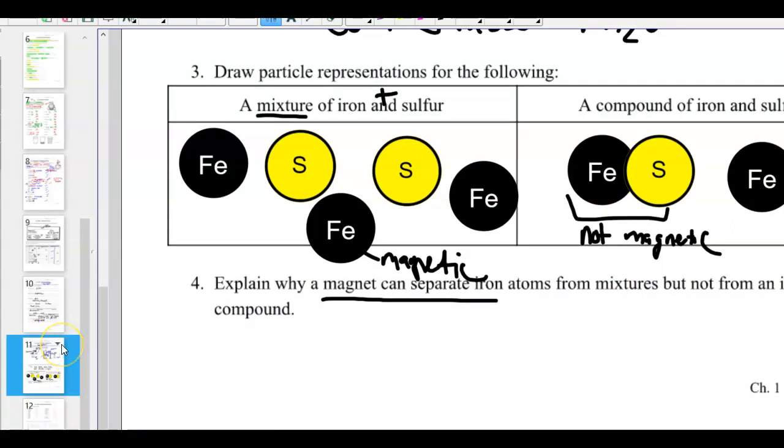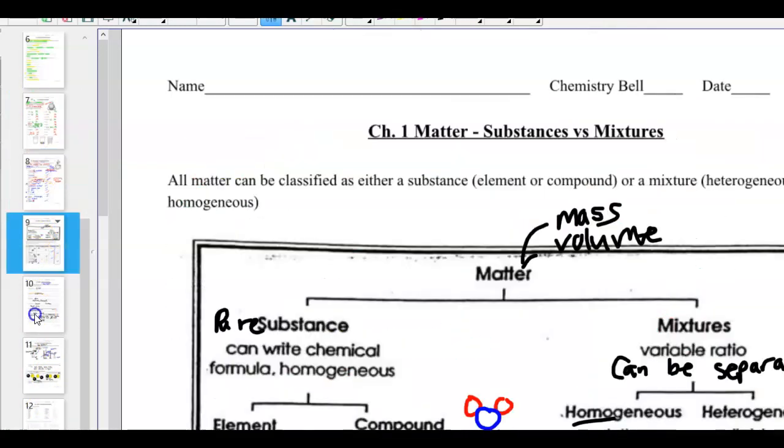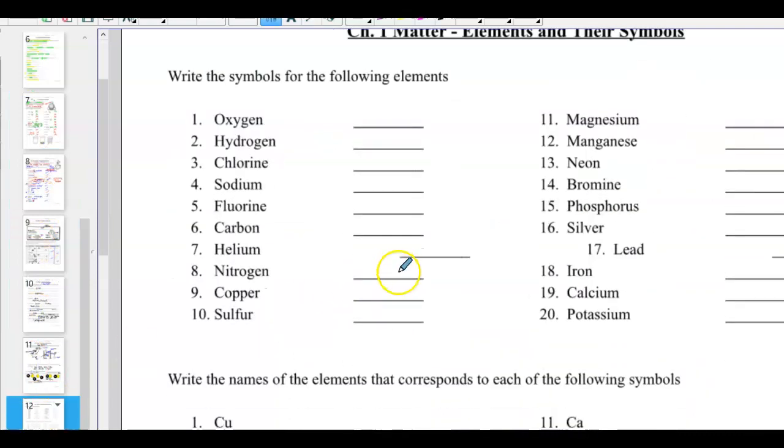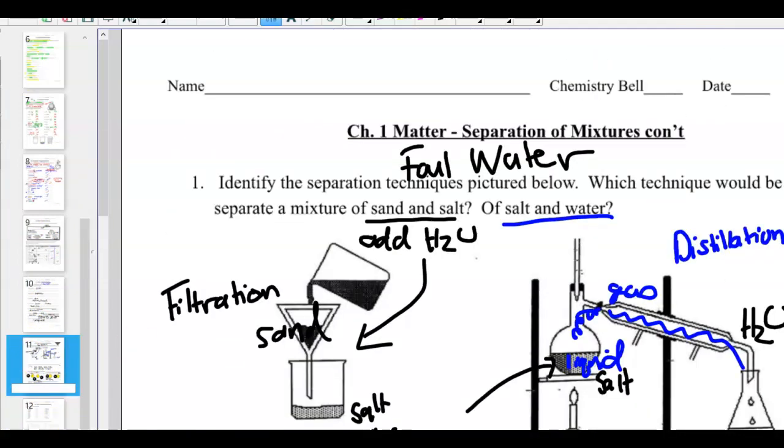So why does the magnet separate the iron? Well, it's by itself. It's not combined. I can pick it up in this mixture. But when I'm in a compound, the compound's not magnetic anymore. It's a new thing with new physical and new chemical properties. That brings us to the end of our mixtures and substances. Pages 7, 8, 9, 10, 11. You should have already done page 12. So thanks for listening, guys. Remember, don't wait to be great. I'll see you next time. Bye.